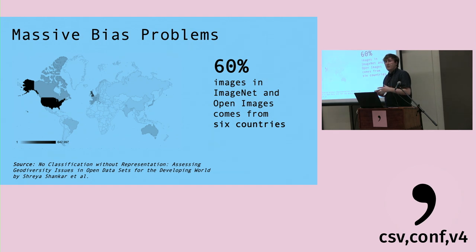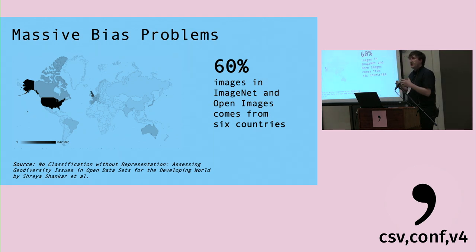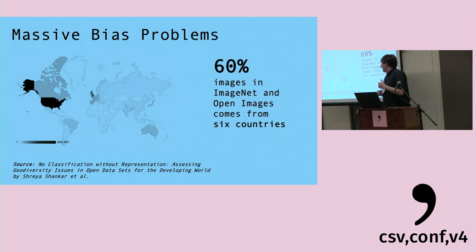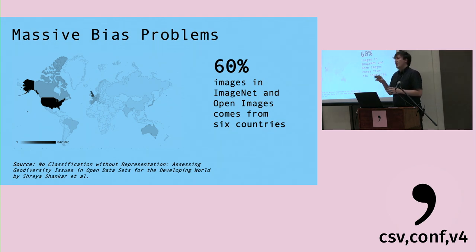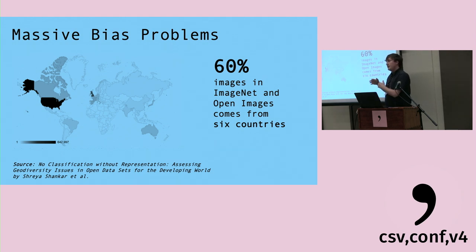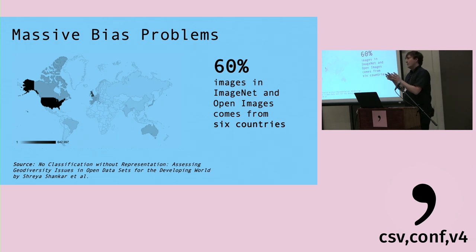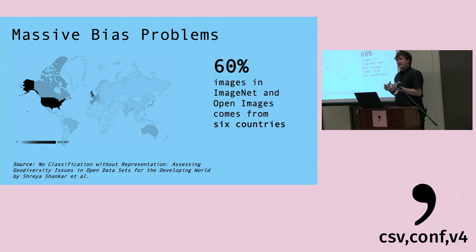Similarly, in many places where we're getting transactional data — even open data from cities — that encodes a lot of bias, a lot of racial bias. There's a great study from Rashida Robinson looking at police departments that were under consent decree, so they were literally being investigated for racist policing, and then using that data directly to build classifiers about where they should police in the future. So even if those police departments fix their policies, they weren't fixing the algorithms built on that data. These patterns repeat over and over in the places where we work.